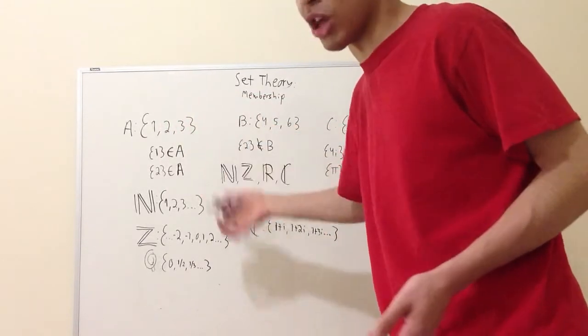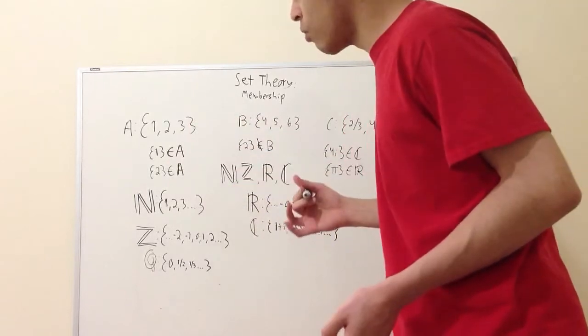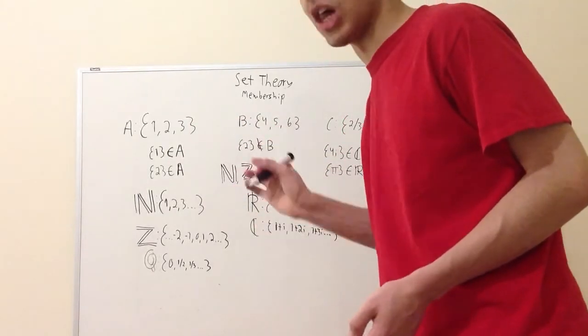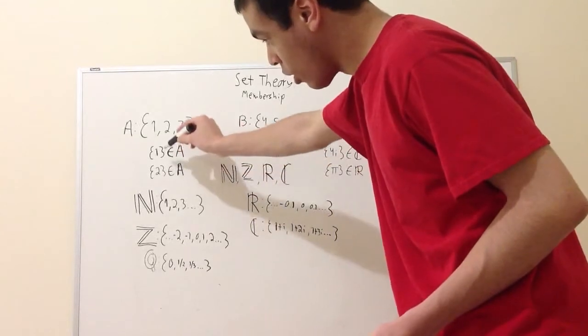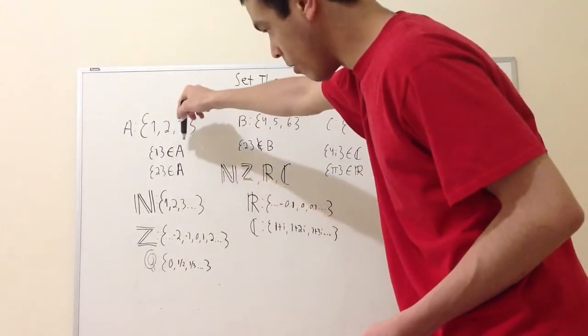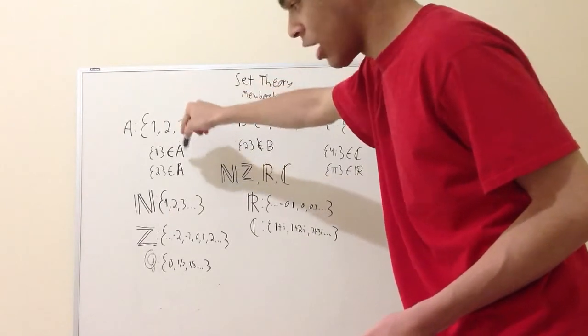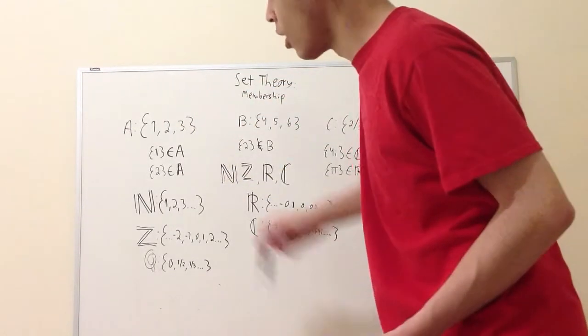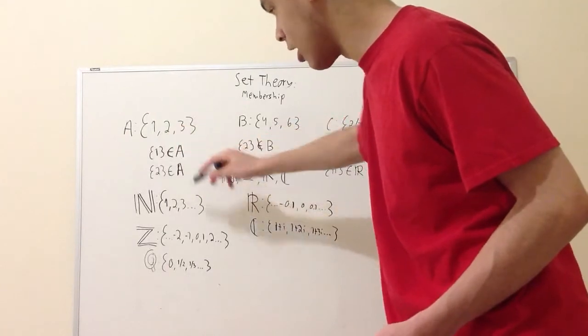each one of those are an element of set A. The way you say that an element is a member of a set, you write down the element and put this epsilon, which is a Greek letter, and then put the name of the set on the right hand side. Pretty straightforward concept. So one is a member of set A and two is a member of set A.